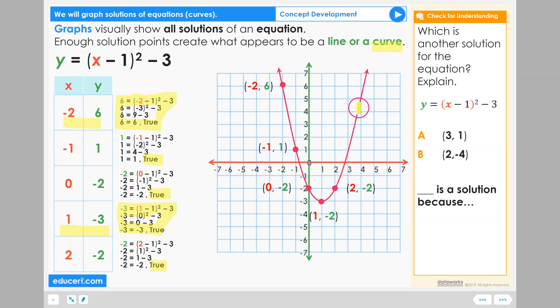Any ordered pair that lies on this line is a solution to this equation. Any point that is clearly not on this graph is not a solution to this equation.